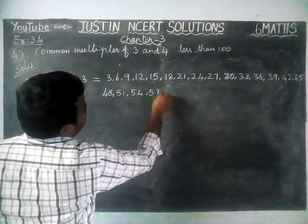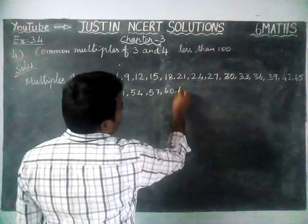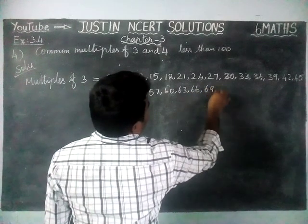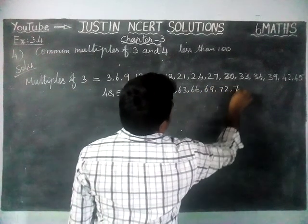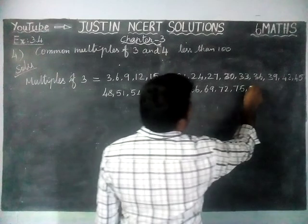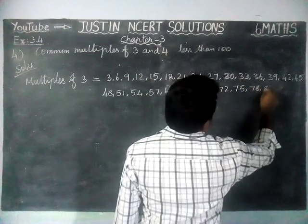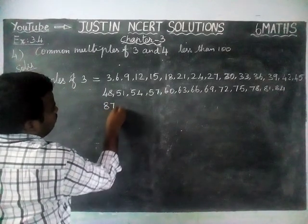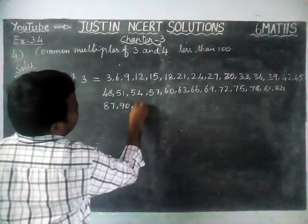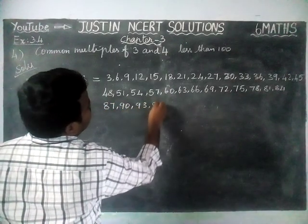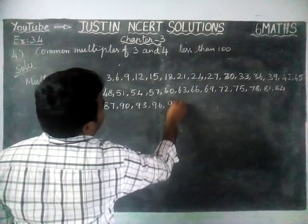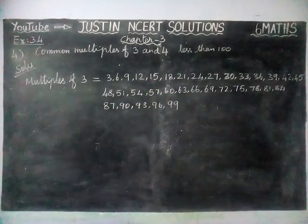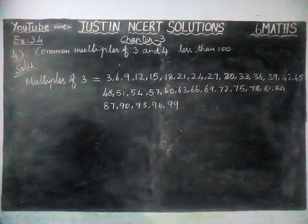Continuing the multiples of 3: 33, 36, 39, 42, 45, 48, 51, 54, 57, 60, 63, 66, 69, 72, 75, 78, 81, 84, 87, 90, 93, 96, 99 — because we have to find less than 100 only, so up to 99. We have found the multiples of 3.